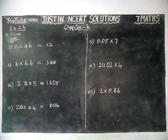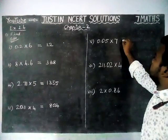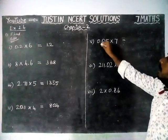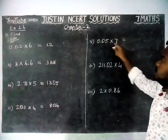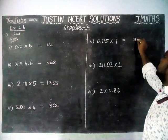Now fifth question, 0.05 into 7. We have to multiply the numbers. First, 5 times 7 is 35.